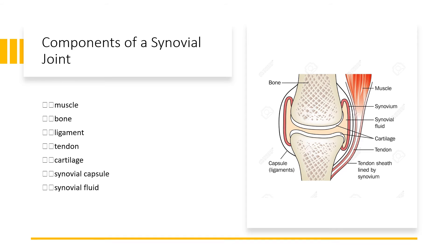The tendon attaches muscle to bone. There isn't a ligament visible on this particular diagram, but we do need to be aware of what a ligament is. Surrounding the synovial fluid is the synovial capsule where it's all stored. You can work through the labeling logically: bone and muscle are obvious; cartilage is at the end of the bones; synovial fluid sits between them for lubrication; and the synovial capsule surrounds it all.